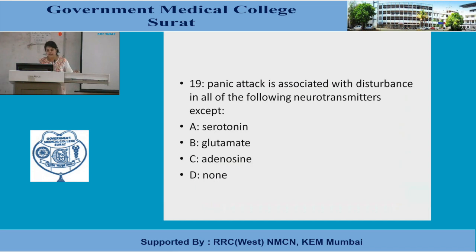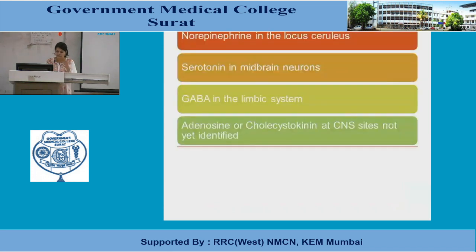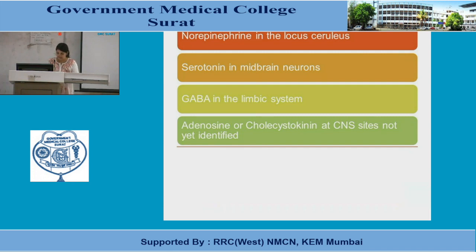Panic attack is associated with disturbance in all of the following neurotransmitters EXCEPT — serotonin, glutamate, adenosine — none. The answer is none, meaning all are involved. Norepinephrine in the locus ceruleus, serotonin in midbrain neurons, GABA in the limbic system, and adenosine or cholecystokinin at CNS sites not yet fully identified.